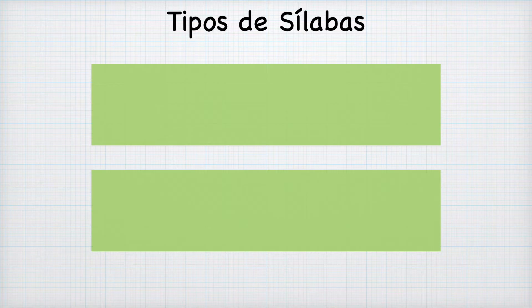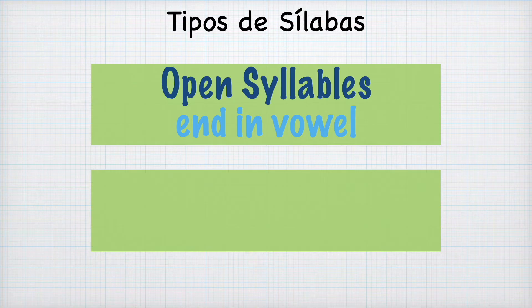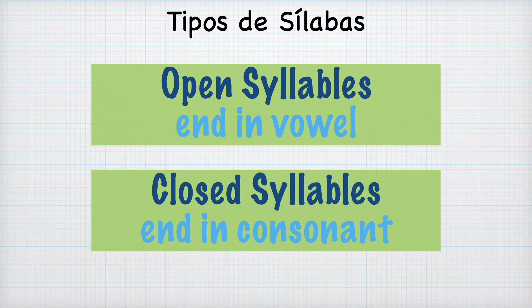Hay dos tipos de sílabas — there are two types of syllables. Open syllables end in a vowel. Closed syllables end in a consonant. Spanish tends to prefer the open syllable structure, so we'll focus a lot on the exceptions today.